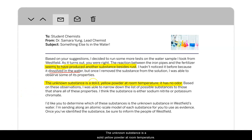The unknown substance is a solid yellow powder at room temperature. It has no odor. Based on these observations, I was able to narrow down the list of possible substances to those that share all of these properties. I think the substance is either sodium nitrite or potassium chromate. I'd like you to determine which of these substances is the unknown substance in Westfield's water. I'm sending along an atomic scale model of each substance for you to use as evidence. Once you've identified the substance, be sure to inform the people of Westfield.